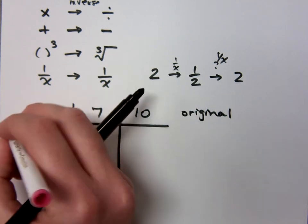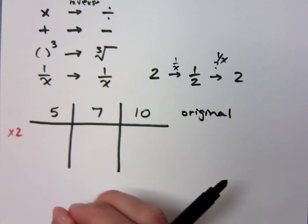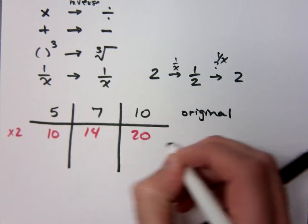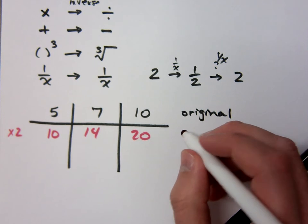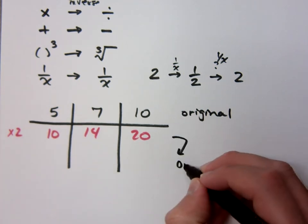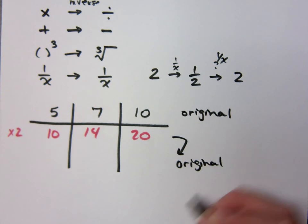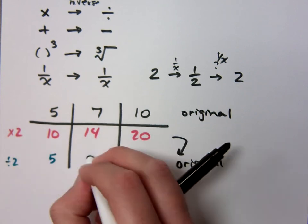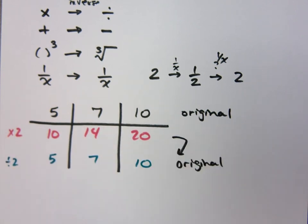This is the original. If somebody comes along, they say I'm going to multiply everything times 2. So then it becomes 10, 14, 20. So you've done something, right? How do I go from this back to the original? What do you have to do? Somebody has to come and divide it by 2, so I get 5, 7, and 10. Do you believe that? Yeah.